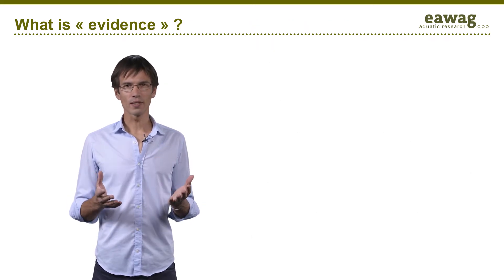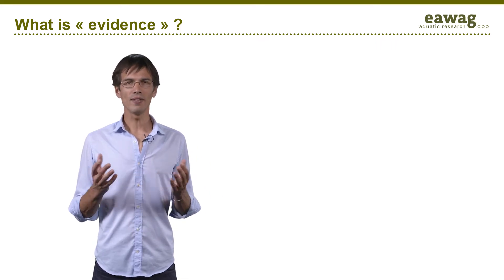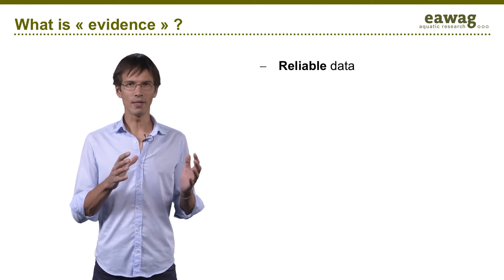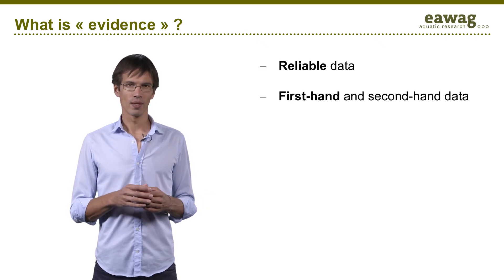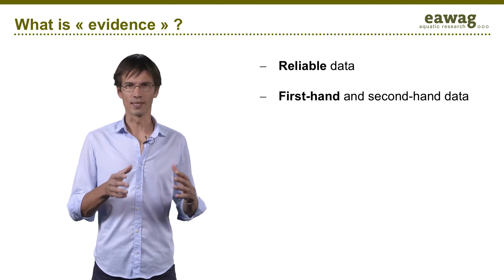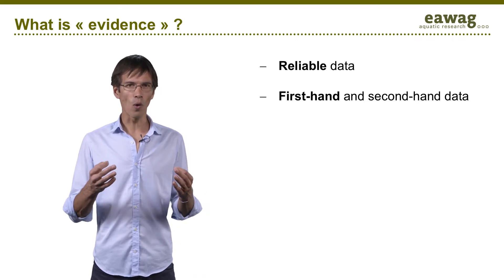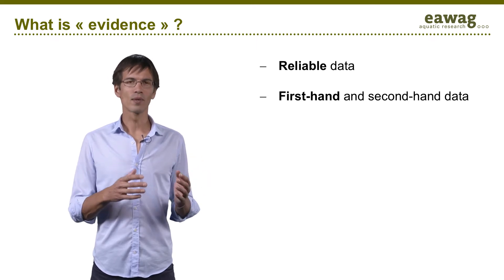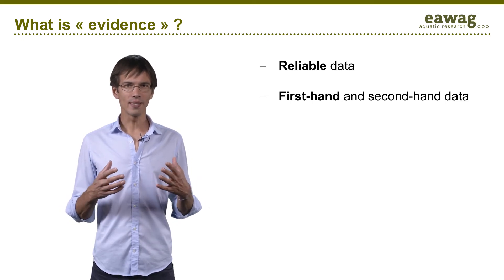In this course, we will talk a lot about evidence-based decision making. But what is evidence? Evidence is about collecting good quality, reliable data. It is best to collect your own first-hand data. Second-hand data, meaning data from existing reports or official statistics for example, can also provide evidence. But second-hand data should always be questioned. You should ask yourself who collected this data, when, and with which methods, as there is a lot of bad or outdated data around.